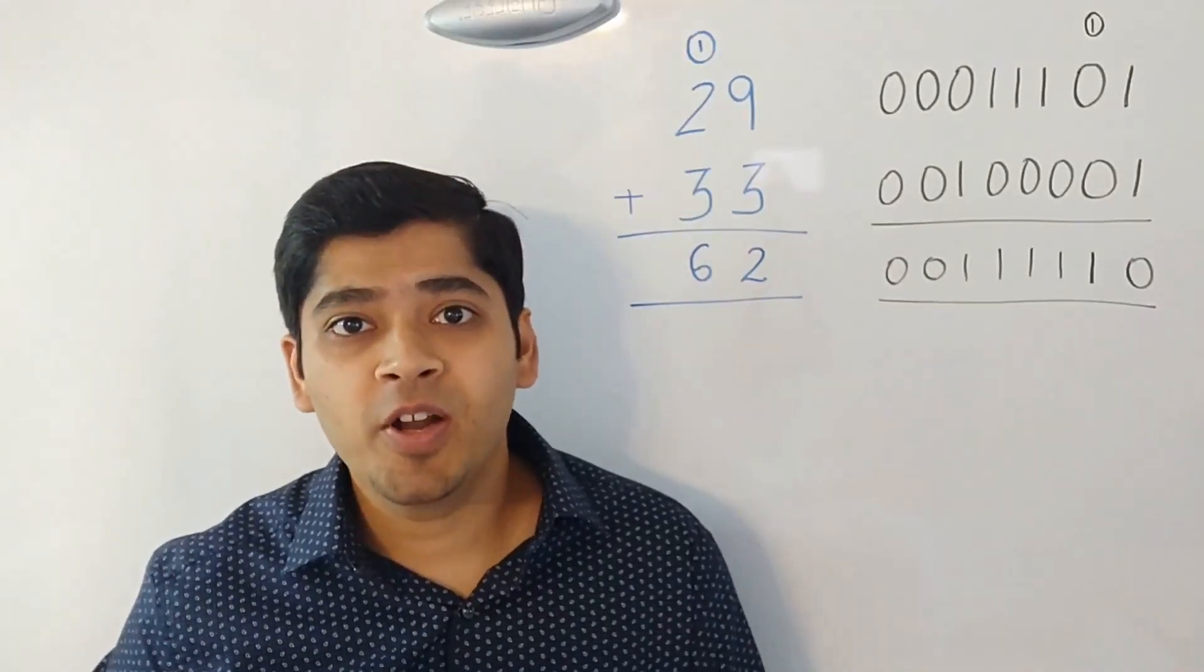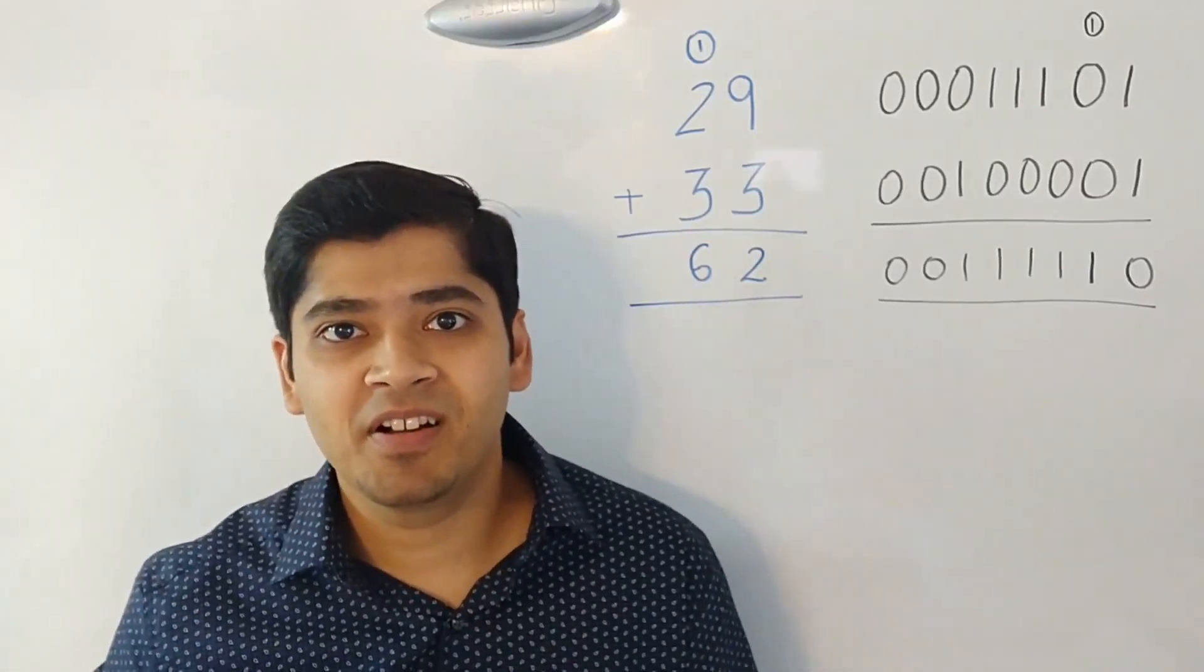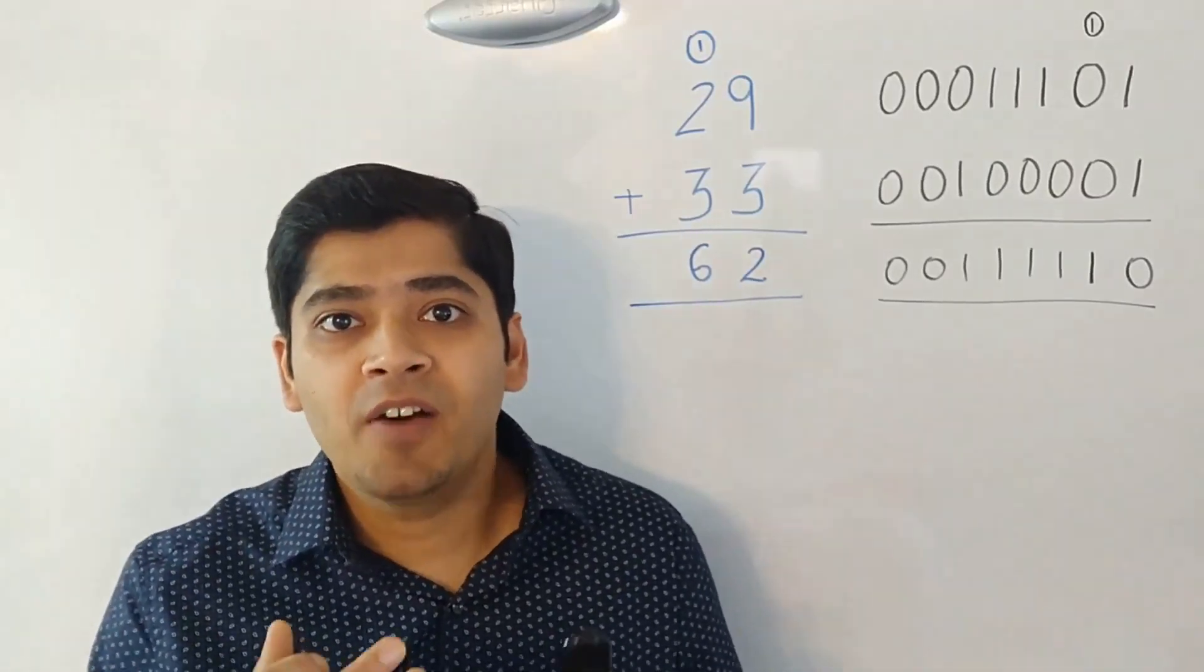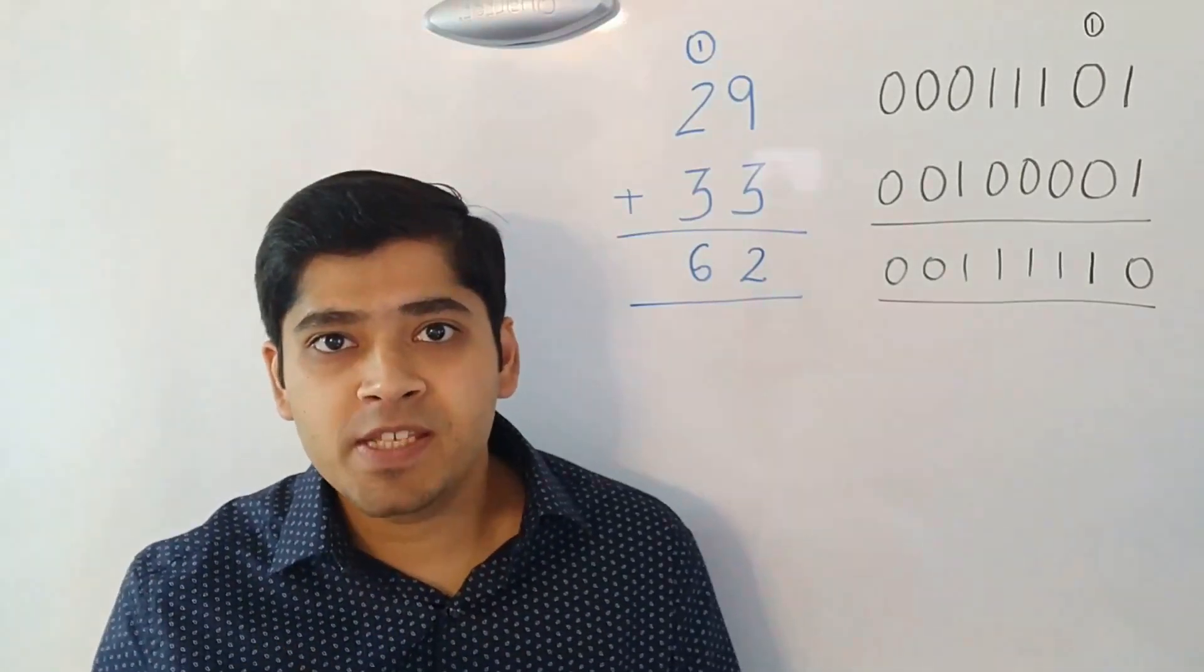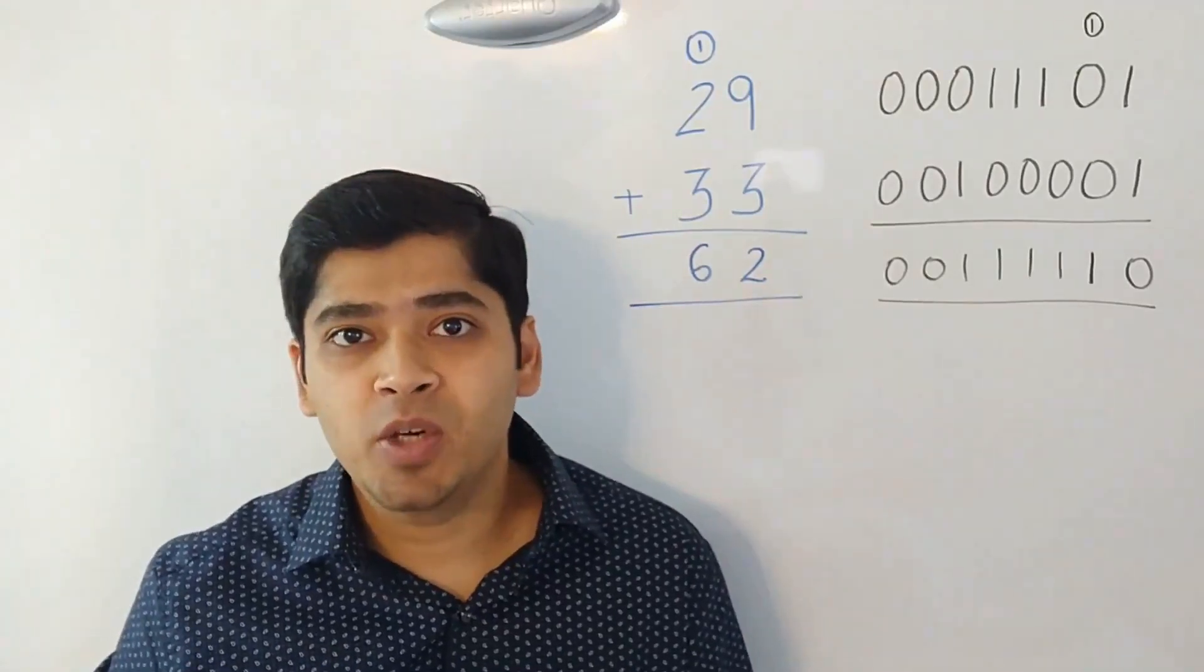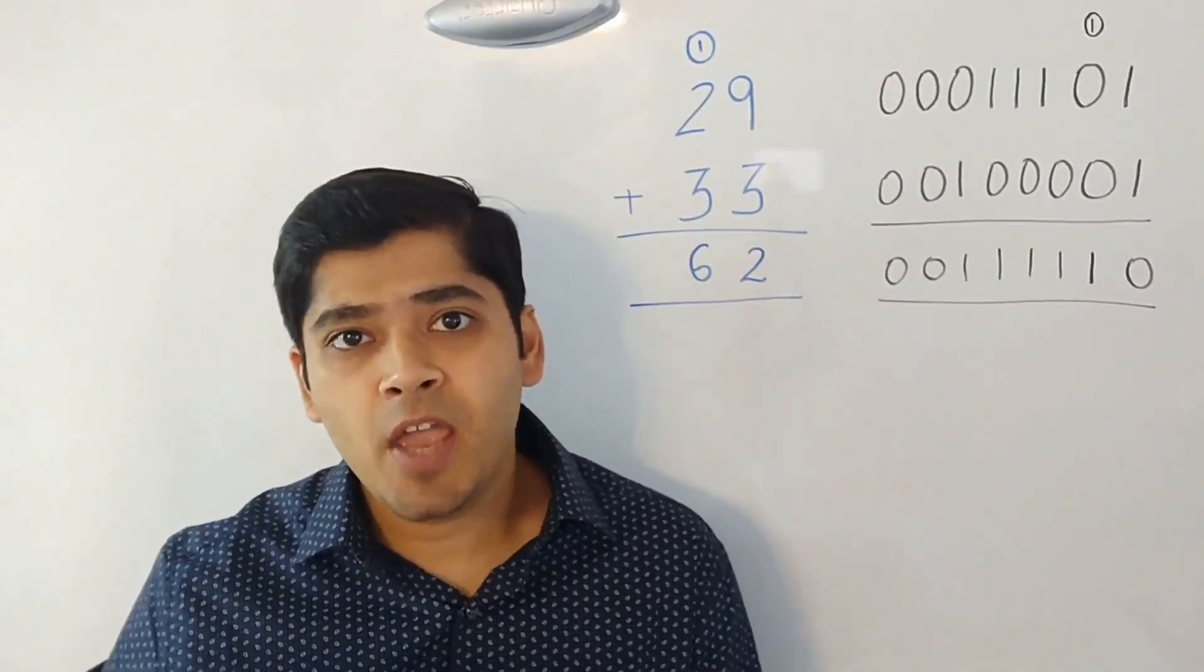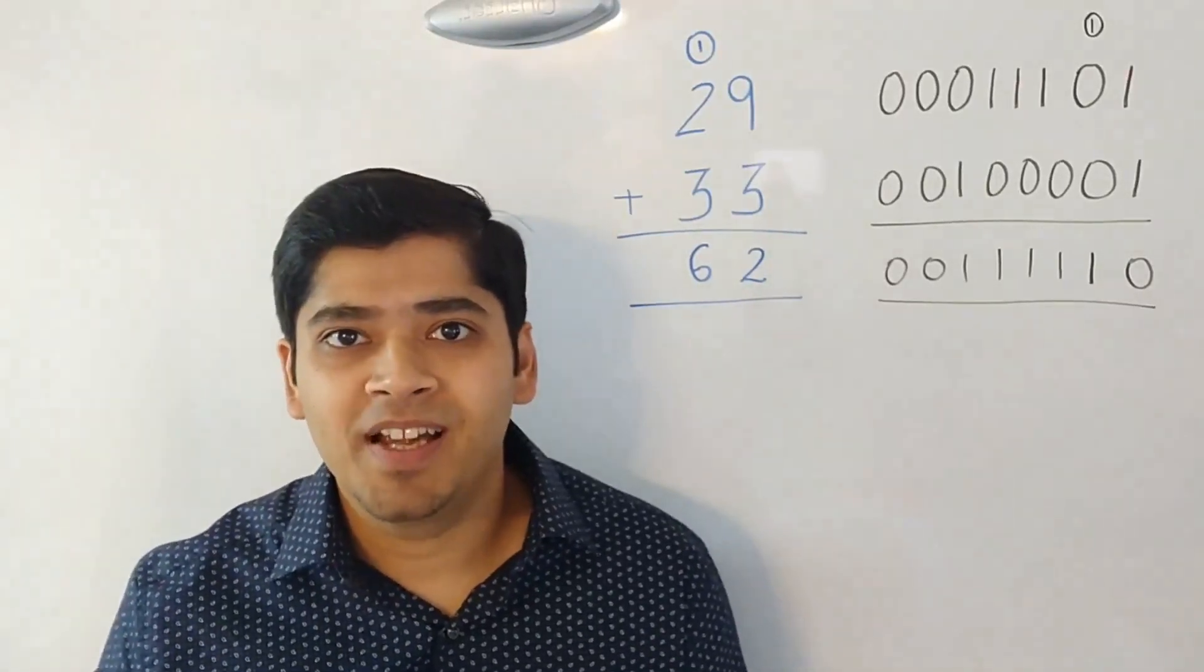In order to understand how we can do this without using plus operator, we need to divide our procedure into two components. One is if you simply add the digits without using the carry over and one is if you were to take only the carry over. Let me demonstrate what I mean by that.